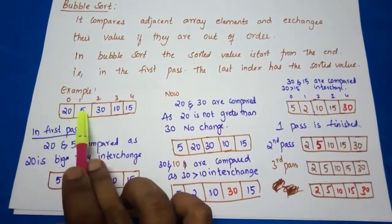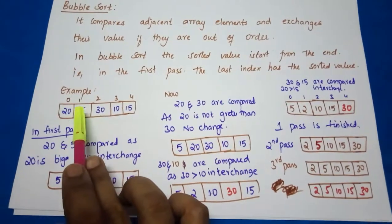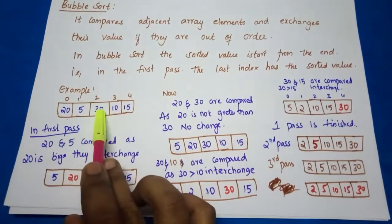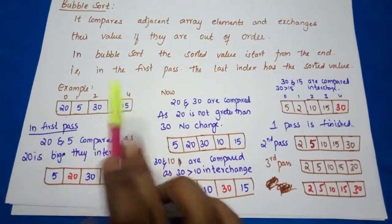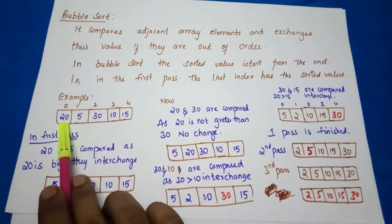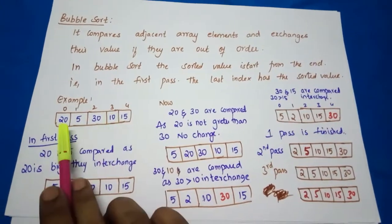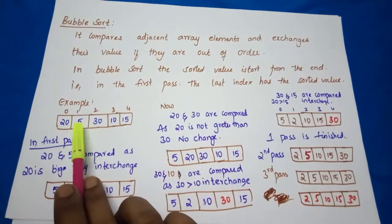This one is adjacent elements - a of 0 and a of 1, and after this a of 1 and a of 2, next a of 2 and a of 3, next a of 3 and a of 4. In that way we compare.